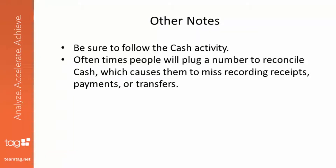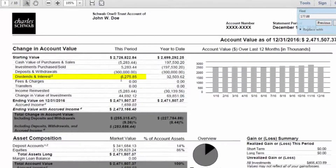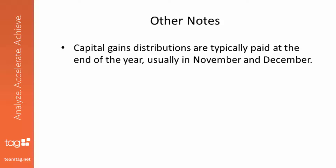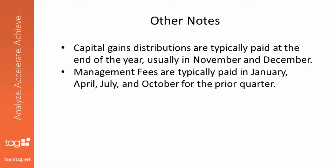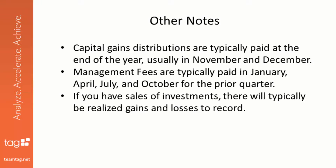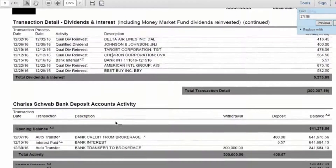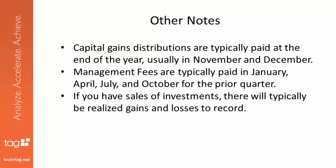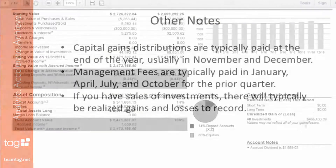One note I always stress: you should always follow the cash activity. Often people will plug a number to reconcile cash, which causes them to miss recording receipts, payments, or other transfers. A good place to look is the daily activity section, which gives you all the dividends and interest, any income reinvested, any management fees, and any transfers out of the account. Capital gains distributions are typically paid at the end of the year, usually in November and December. Management fees are typically paid in January, April, July, and October for the prior quarter. If you see any sales activity — investments purchased and sold — you'll likely have realized gains and losses, so make sure you record those.